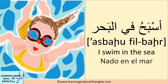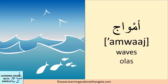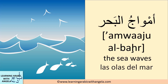Asbahu fil bahr — I swim in the sea. Mawja' is a wave, a single wave. In the plural, amwaj means waves. Amwaj al-bahr means the sea waves. Note that annexation in Arabic works the opposite way from English — instead of saying 'the sea waves', we start with waves and then the sea: amwaj al-bahr.